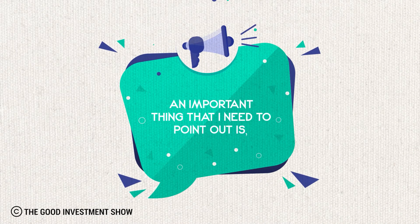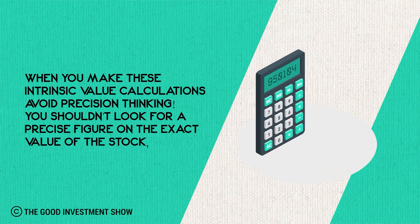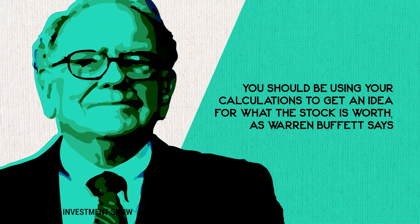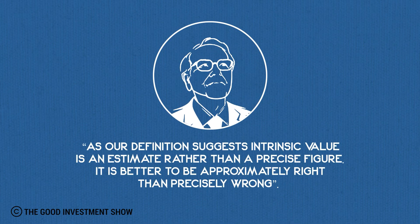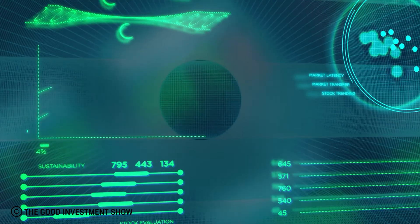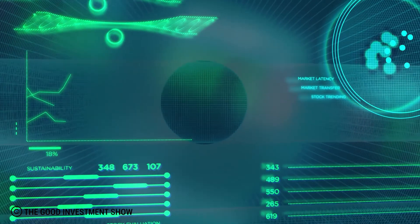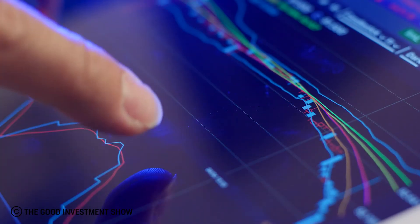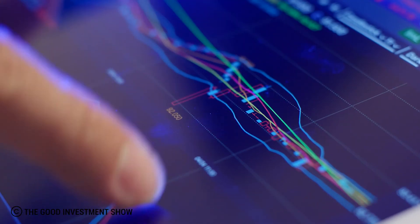An important thing to point out: when you make these intrinsic value calculations, avoid precision thinking. You shouldn't look for a precise figure on the exact value of the stock. As Warren Buffett says, intrinsic value is an estimate rather than a precise figure — it's better to be approximately right than precisely wrong. Make a habit of calculating the intrinsic value of each stock you analyze; over time you'll get a very good feel for the market and become skilled at identifying stocks that are undervalued, because the goal is to find stocks priced well under their intrinsic value.